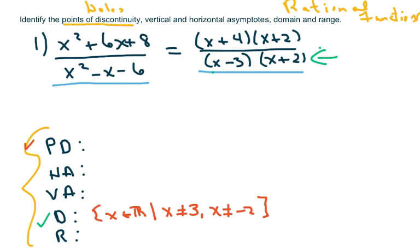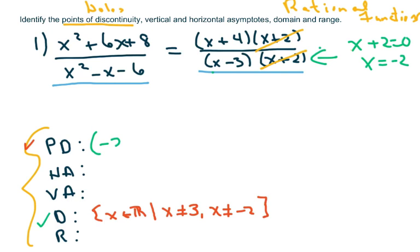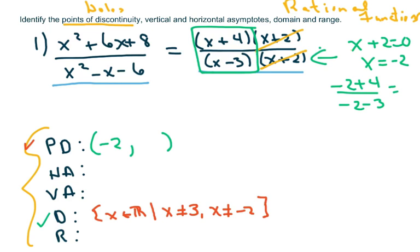Now let's go back up to the points of discontinuity. In this case, we do have a point of discontinuity, or a hole, because you can cancel these factors. What you do is set the factor to zero and solve for x, so x equals negative two. Our depressed equation is here — you plug in negative two to get your y. When you plug in negative two, we get negative two plus four over negative two minus three, which is two over negative five, so our y is negative two-fifths.